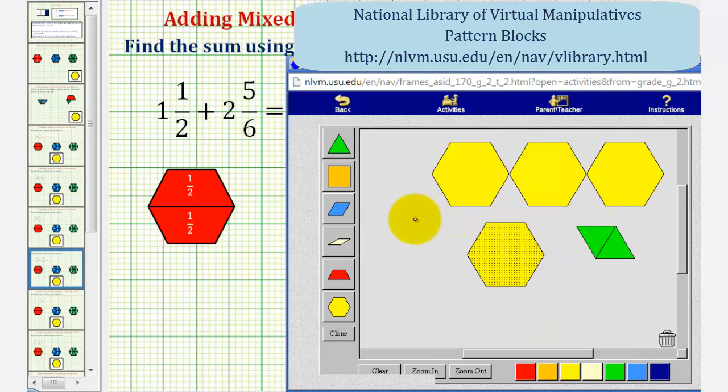And we can also exchange one blue pattern block for these two green pattern blocks. Remember the blue pattern block is equal to one-third.